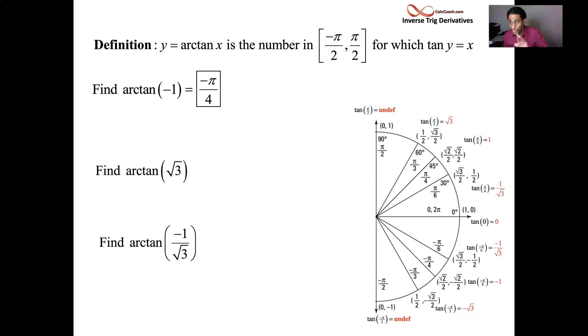The angle that has a tangent of root 3, that's pi over 3. The angle that has a tangent of negative 1 over root 3, anytime it's negative, it's down in the fourth quadrant there, so it's going to be negative pi over 6. So you know how to evaluate the arctan function.